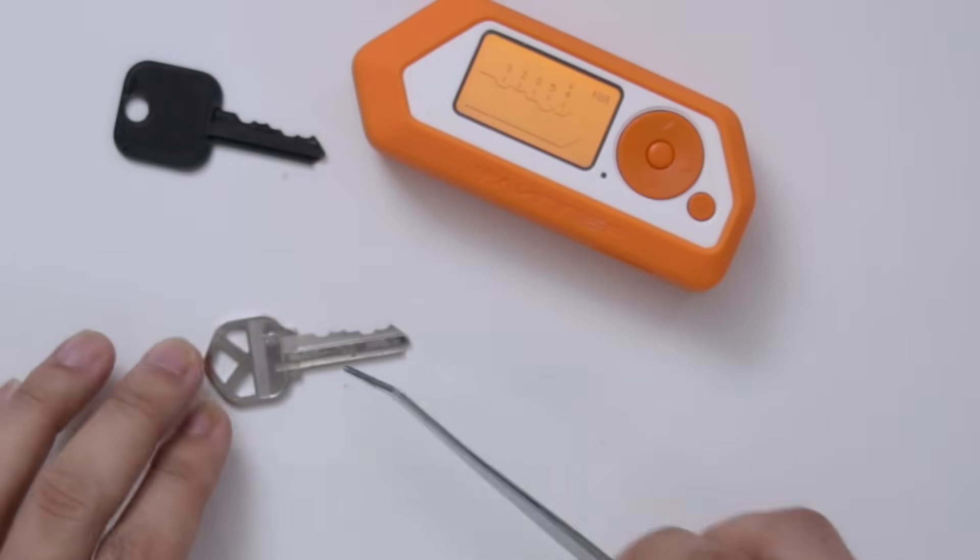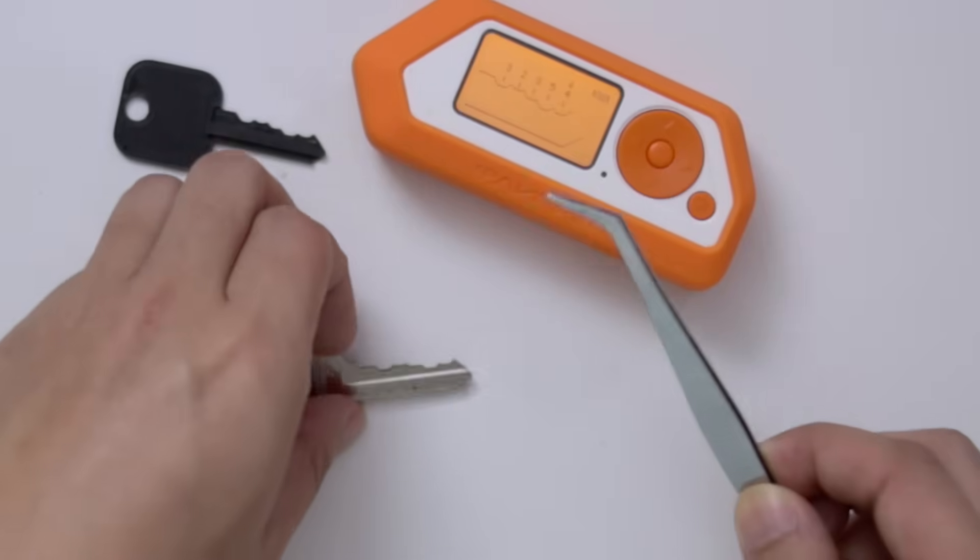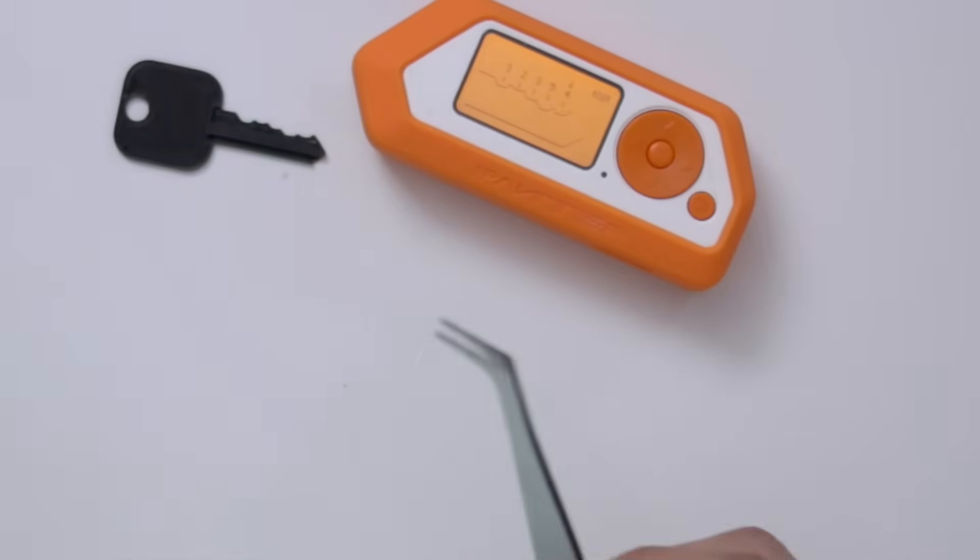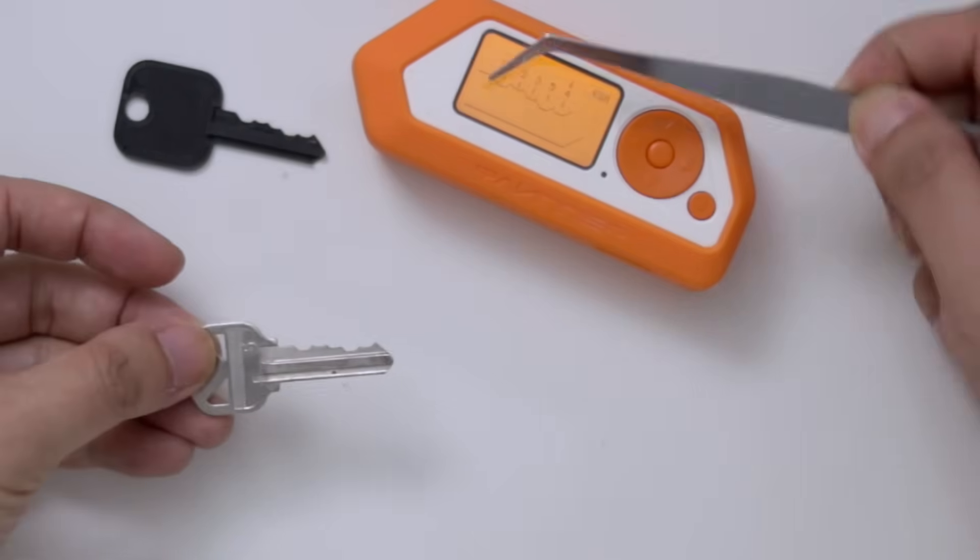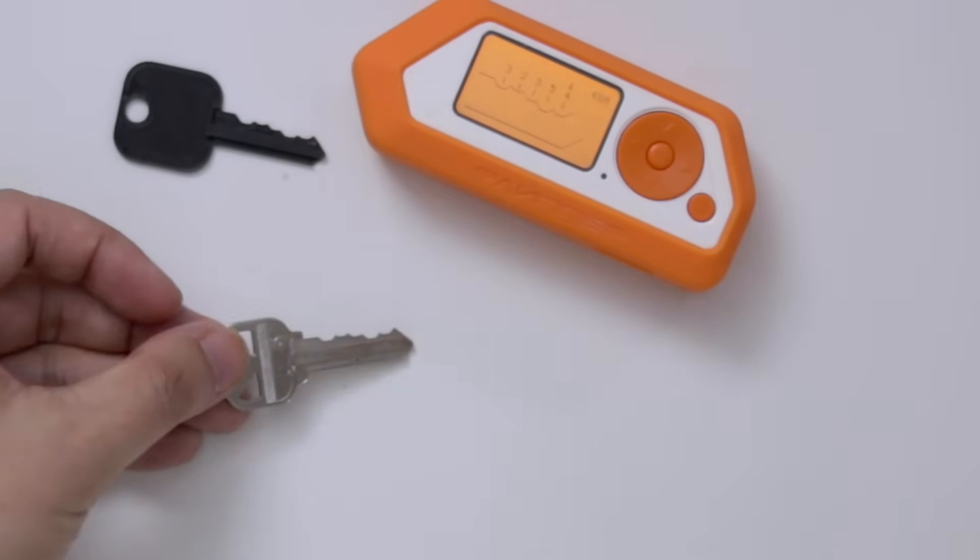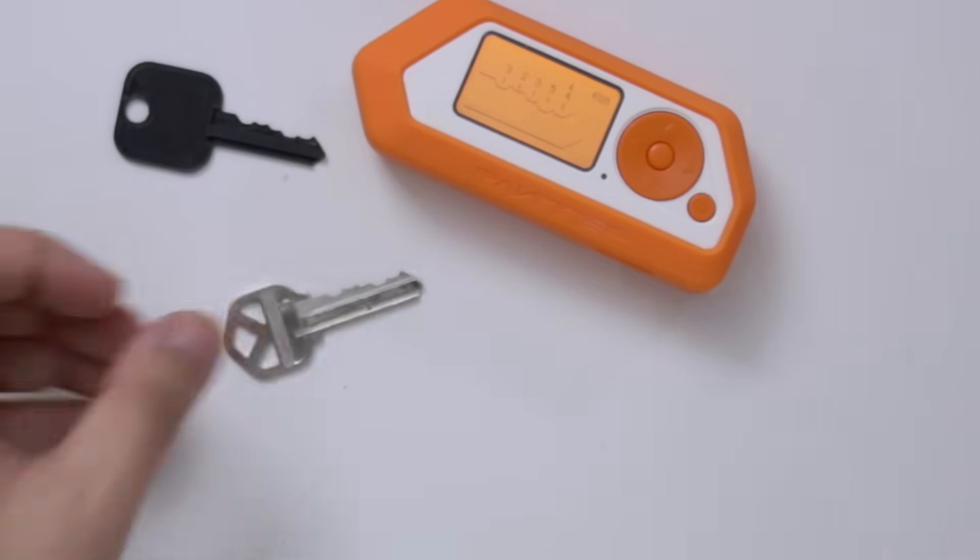Especially if you got an image of a key, like, now I have a physical key that I could just do this, but if you got an image of a key, you could actually just take that image, cut it out into shape, and figure out what the grooves are, and then get a clone of that key as well.